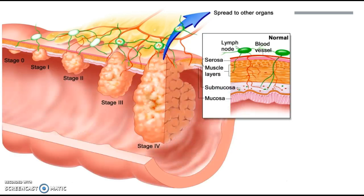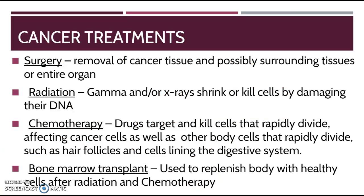Here we can see different stages of tumors and this angiogenesis — blood vessels are growing towards the tumor to feed it and give it the materials it needs.